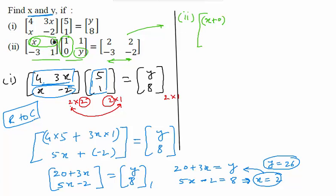Now taking the same row but with the second column: x is multiplied by 1 and 0 is multiplied by y, so the result is x plus 0. This element should be written at position first row, second column.